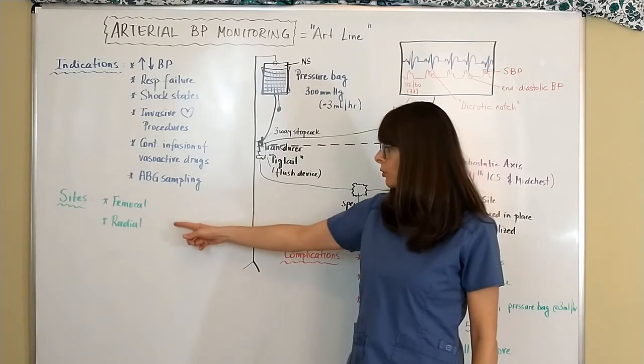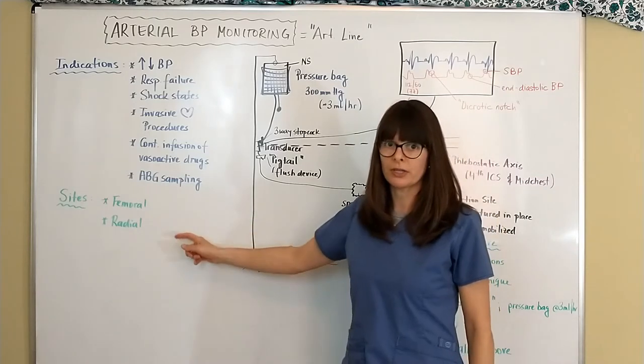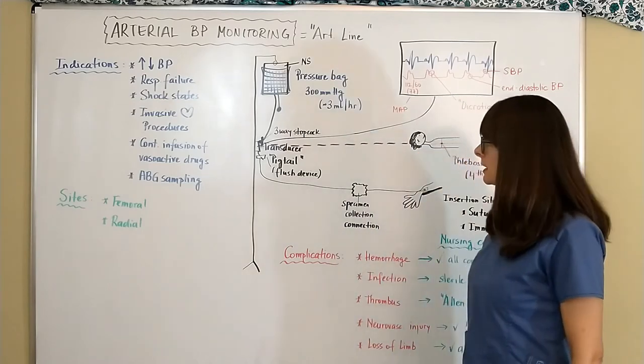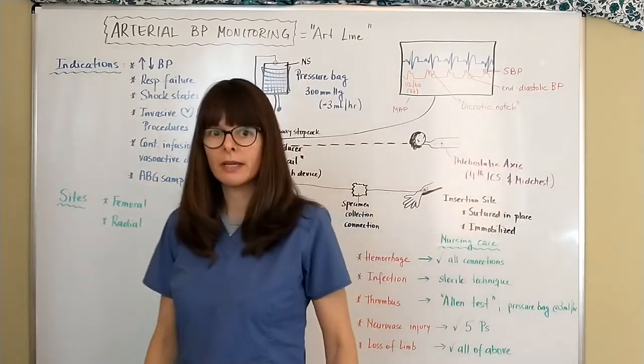Sites typically used for arterial blood pressure monitoring are usually femoral or radial arteries.